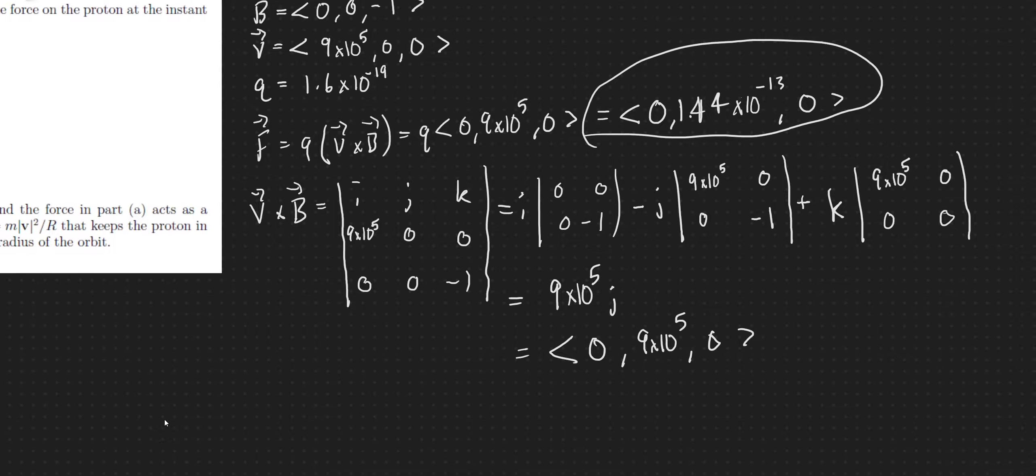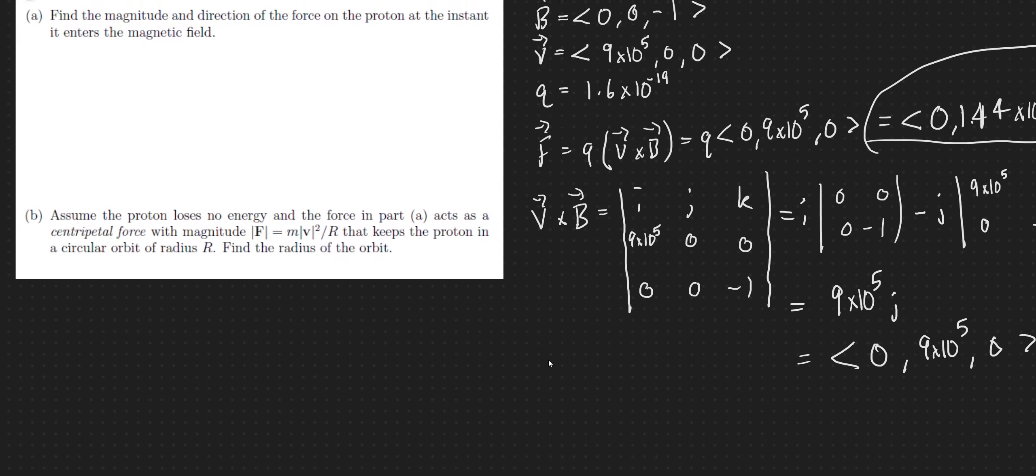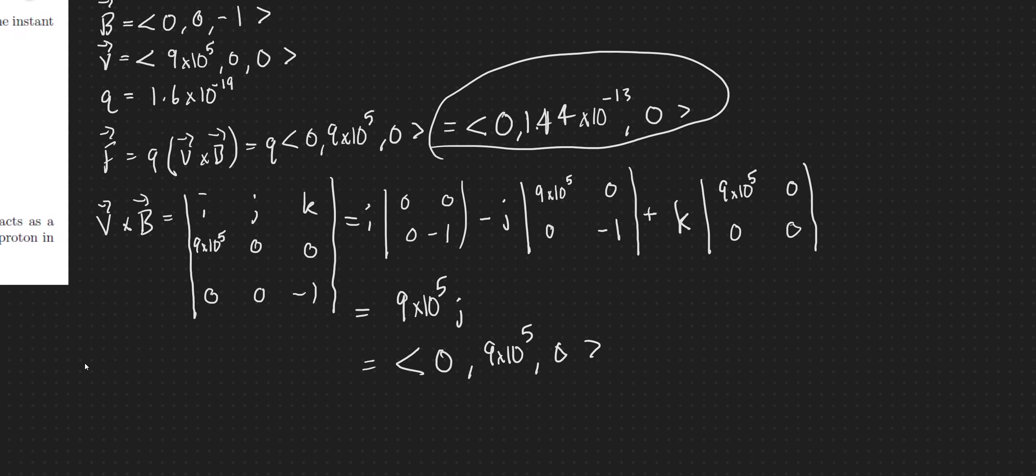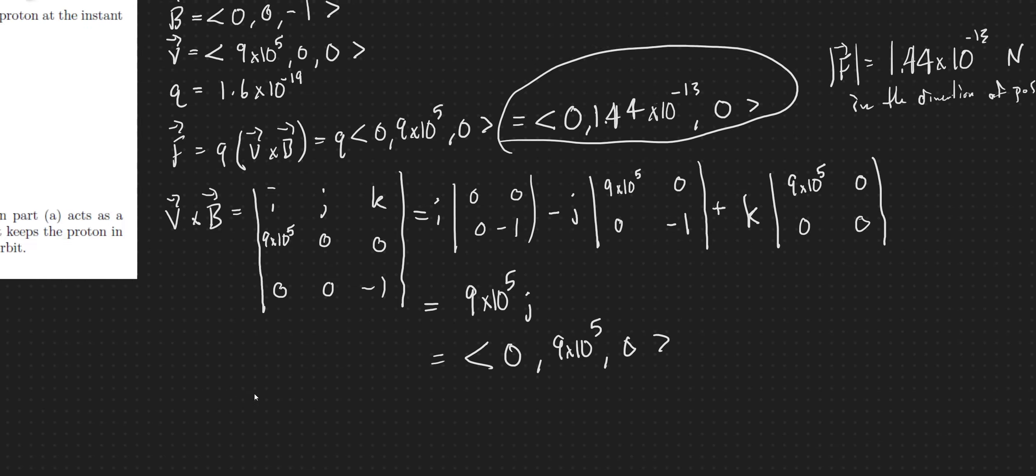So here's the answer to the first part of our problem, the magnitude and direction of the force. So its direction is along the J axis with a magnitude of 1.44 times 10 to the negative 13th is our force. So we can say that. We really should give both the magnitude and direction. So what can I say here? I can say that the magnitude of F is exactly 1.44 times 10 to the negative 13th. And this is in newtons, and this is in the direction. We can give a direction by saying in the direction of the positive Y axis.